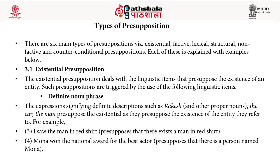There are six main types of presuppositions: existential, factive, lexical, structural, non-factive, and counterfactual presuppositions. The existential presupposition deals with linguistic items that presuppose the existence of an entity. Such presuppositions are triggered by definite noun phrases and the possessive case. Expressions signifying definite descriptions — such as proper names like 'Rakesh,' or phrases like 'the car' or 'the man' — presuppose the existence of the entity they refer to.